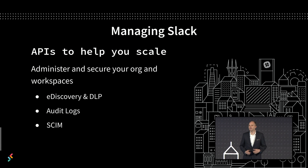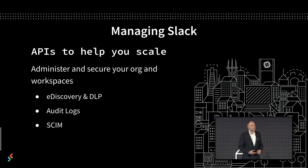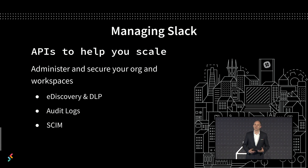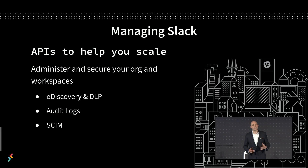Slack has always worked great for small teams and for startups. And last year we launched our Enterprise Grid product, so now we're able to help organizations with tens of thousands of team members do their very best work. But as an organization grows, it faces a slightly different set of challenges than maybe one of these smaller companies or maybe the challenges that you had when you were a startup. And Slack itself becomes something that needs to be managed more directly. So we want to talk about a set of APIs that you may be less familiar with that will help you keep your Slack org humming along nicely.